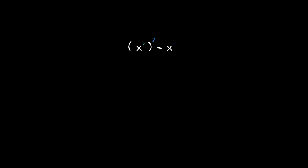If we think about property 2, we notice that x on the right-hand side is the same as x to the power 1, and the left-hand side — by property 2 — is x to that question mark times 2. Comparing exponents, 2 times our mystery exponent must equal 1, which means the mystery exponent equals one-half.